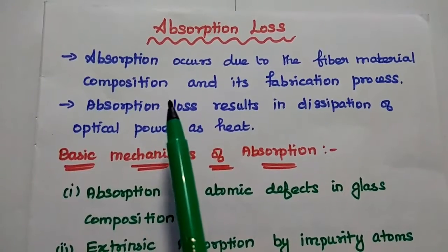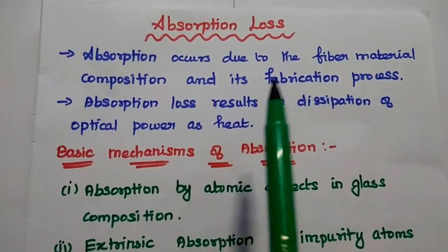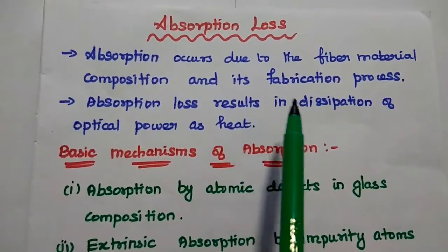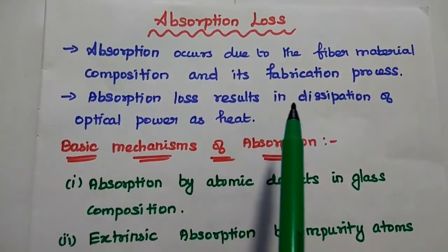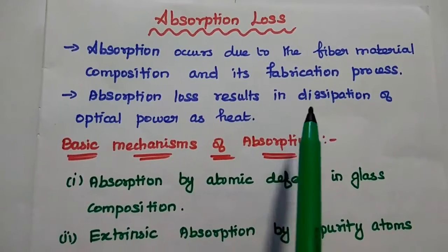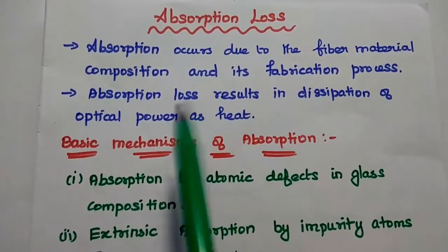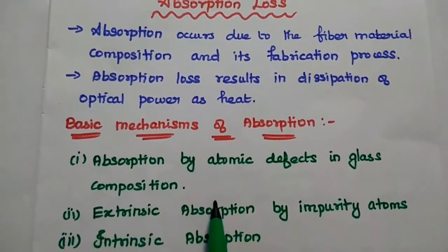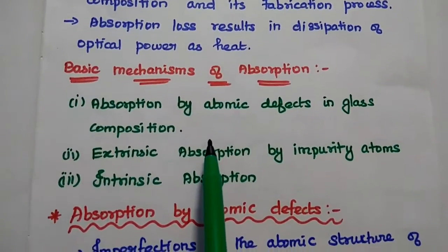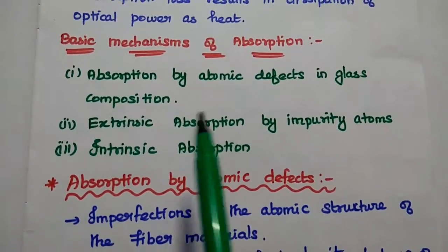Absorption loss is mainly due to the fiber material composition and its fabrication process. This loss results in dissipation of optical power as heat in the cable. There are three basic mechanisms of absorption in optical fiber.